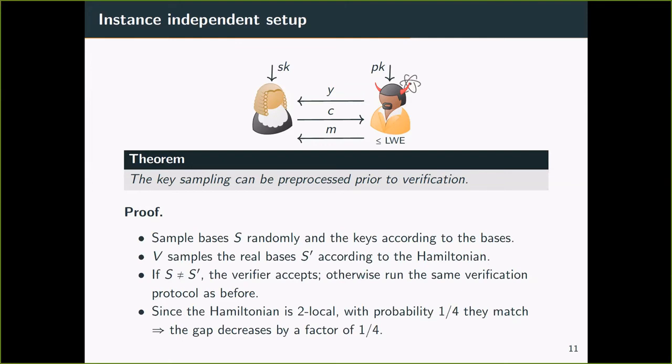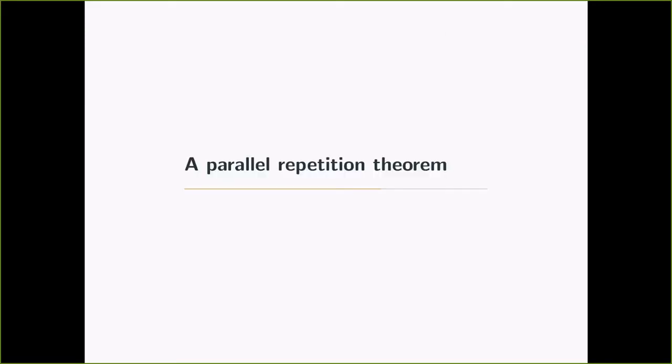In the soundness analysis, because the Hamiltonian is two-local, with probability one-fourth, they match. And the cost is that the gap gets decreased by a factor of one-fourth. This is fine because we can apply a standard amplification procedure to amplify the gap. Now we have a three-message protocol with instance-independent preprocessing.